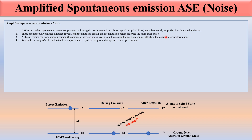Population inversion is the main cause of amplification and is the state necessary for stimulated emission to occur. When spontaneous emission happens, an electron automatically moves from E2 to E1, which means the number of electrons in the excited state E2 is decreasing. So spontaneous emission is also responsible for reducing the population inversion.